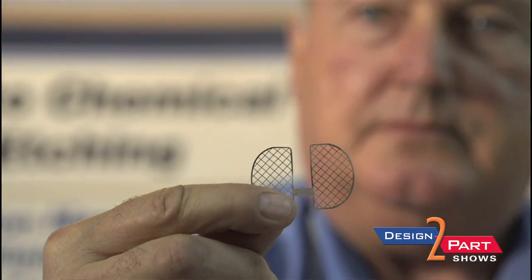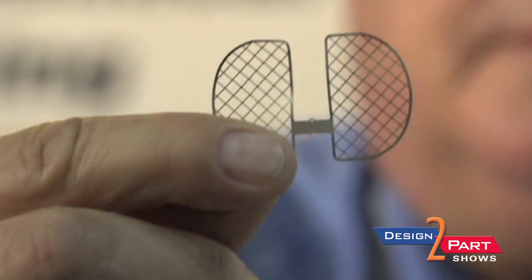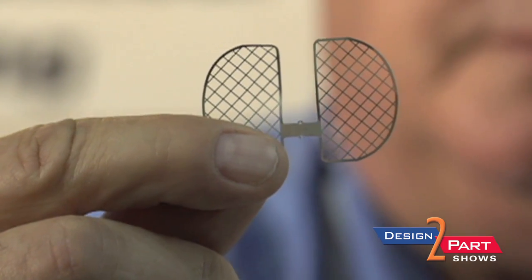This is a battery grid for a pacemaker defibrillator product. It's probably one thousandths of an inch thick, which is one-third of a human hair. Photo etching is the primary way to manufacture parts of that thickness.